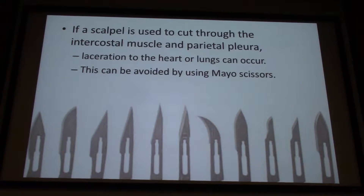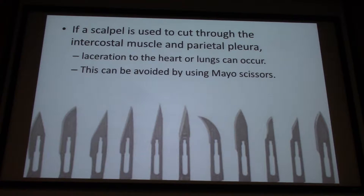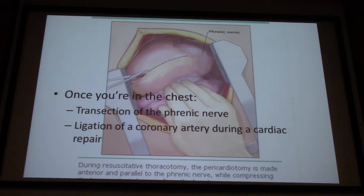We have four instruments if we include the rib spreader. You want the least amount of movement back and forth because every time you turn or move something with a sharp object in your hand, that's when someone else or you yourself gets injured. You want to use Mayo scissors when cutting through the muscle and the pericardium — something that can cut but has a lesser chance of stabbing someone else.